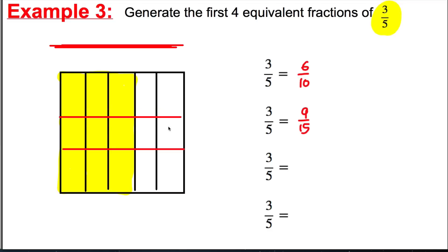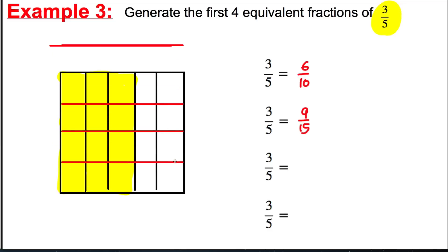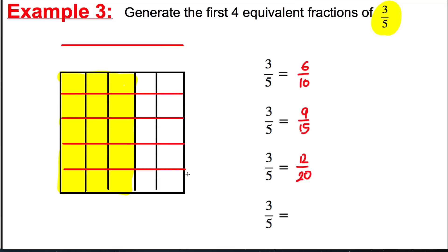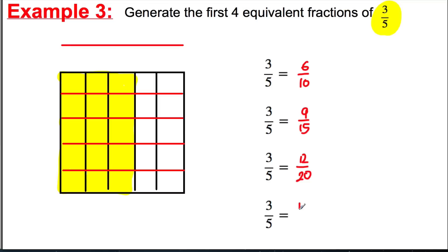Now split it into four parts horizontally, and we see it's the same as twelve out of twenty. And we're done — those are the first four equivalent fractions of three fifths. Notice that in each case I've multiplied the numerator and denominator by two, three, four, and five respectively.